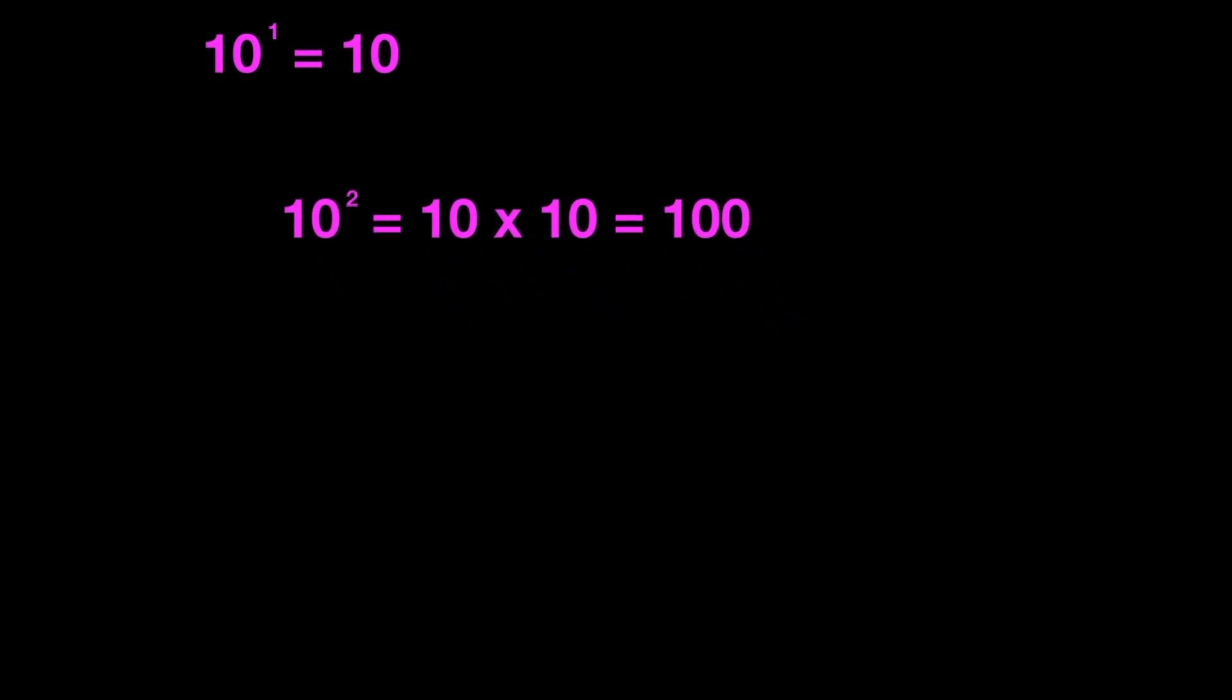Using exponents to represent powers of 10 would look like this. Let's start with 10 to the first power. 10 to the first power is just another way of saying 10. 10 to the power of 2 would be like 10 times 10, or 100. 10 to the second power would be another way of saying 100.